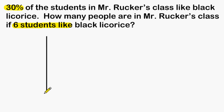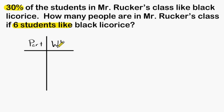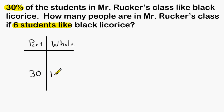One way to set up any percentage problem is by setting up a ratio table. The two units being compared as our ratio will be the part as compared to the whole. The percentage given is 30, and that is going to be our part, and right next to that in the whole column we write 100, because a percentage is always out of 100.